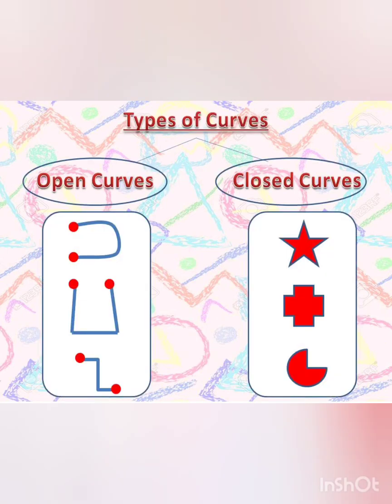There are two types of curves: open curves and closed curves. Open curves are the shapes that have open ends. Such figures start and end at different points. I hope you can observe the red end points in the given open curves. On the other hand, closed curves do not have any open ends. They are closed by line segments or curved lines. Kindly observe the given figures carefully to understand the closed curves properly.